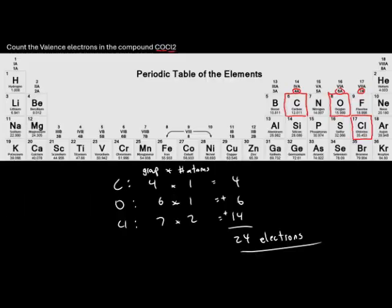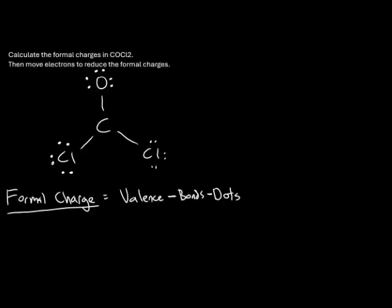Looking at the periodic table, chlorine is in group 7A, so the valence is seven. We subtract one bond connected to this chlorine, then subtract six dots around it. Seven minus one minus six gives zero, meaning this chlorine is neutral. That's a good thing — we want formal charges to be zero whenever possible.